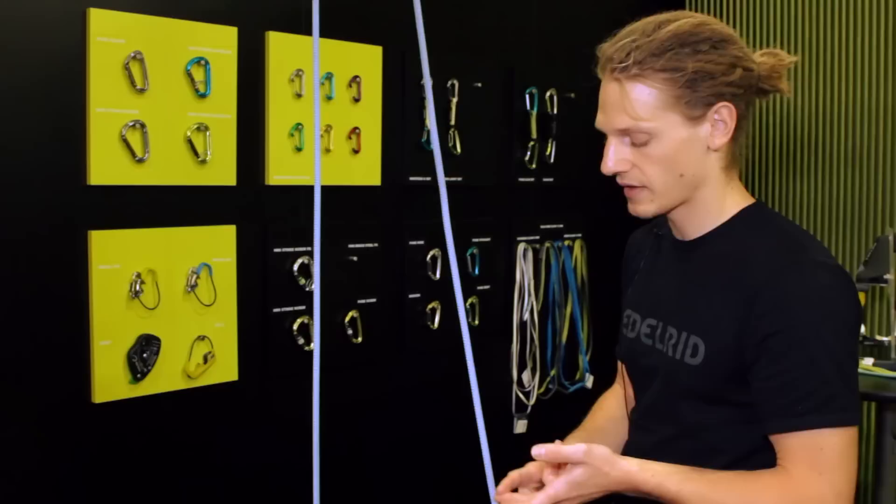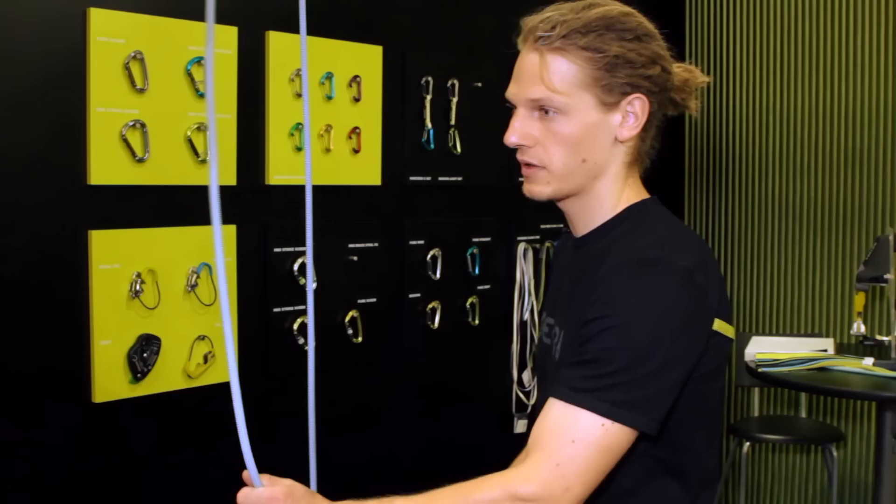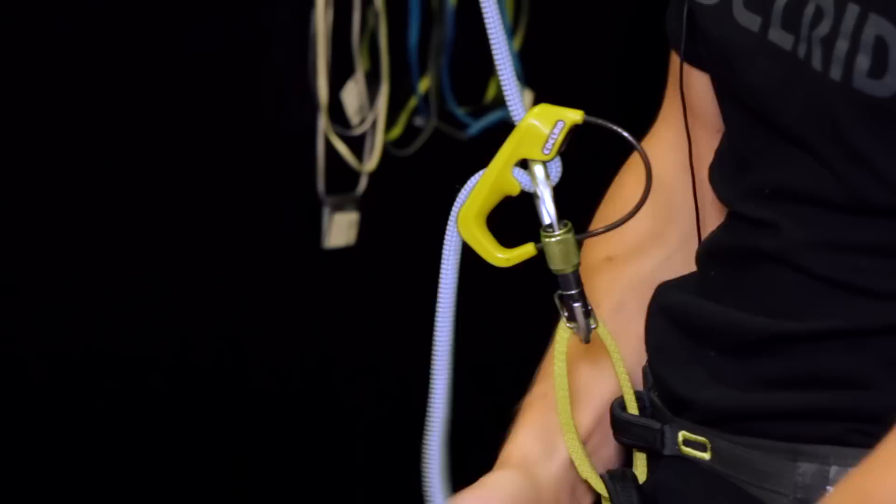The problem that you have with a Mega Joule, with a Grigri, with an Edelrid, with all these devices, ClickUp as well, is that the fall is really static. The belay just closes up. So what can happen if people don't know how to belay with the body, is that you get a really hard fall and people just smash the wall.